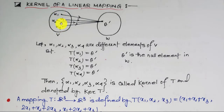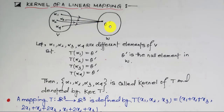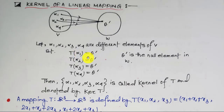are those elements whose images are exactly theta dash. Theta dash is the null element of set W, and theta is the null element of set V — that is, theta dash is the null element of the co-domain set W. So we have some elements of set V whose image is theta dash. There exist a few elements from set V, and the images of those elements will be theta dash: T(alpha 1) = theta dash, T(alpha 2) = theta dash, T(alpha 3) = theta dash, and T(alpha 4) = theta dash.